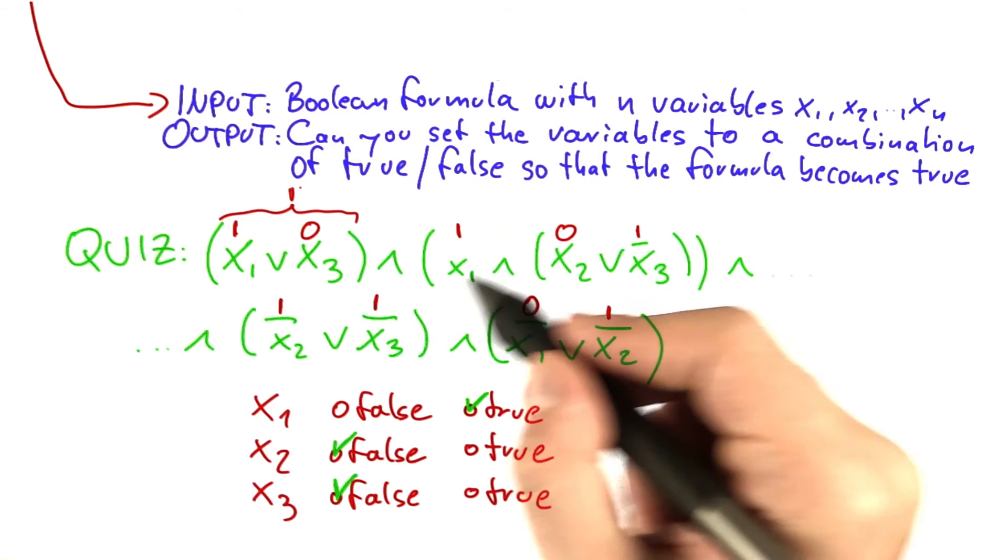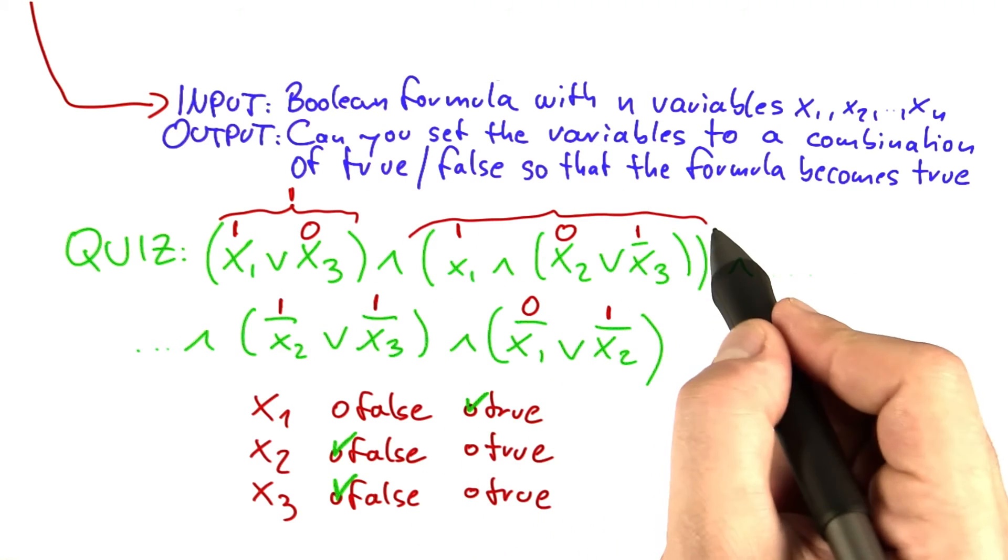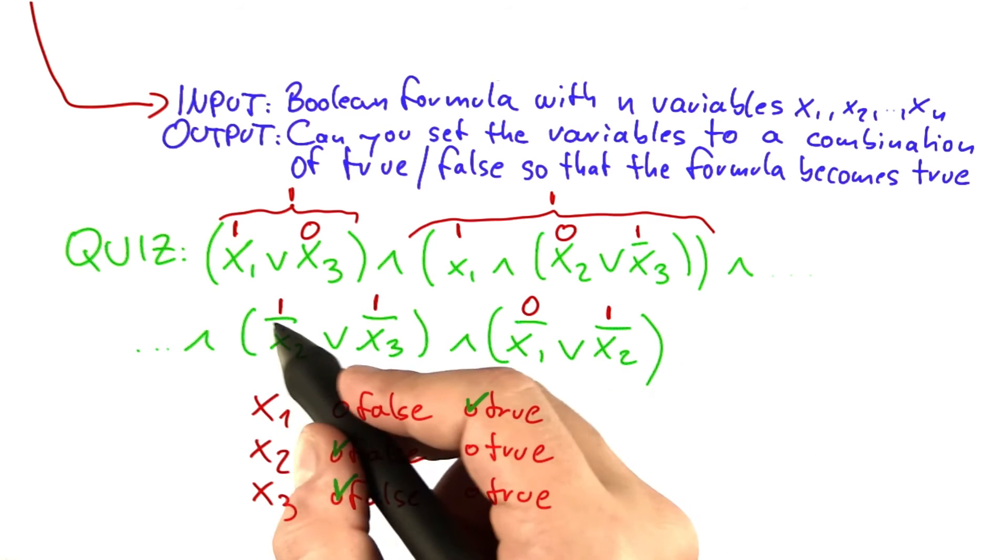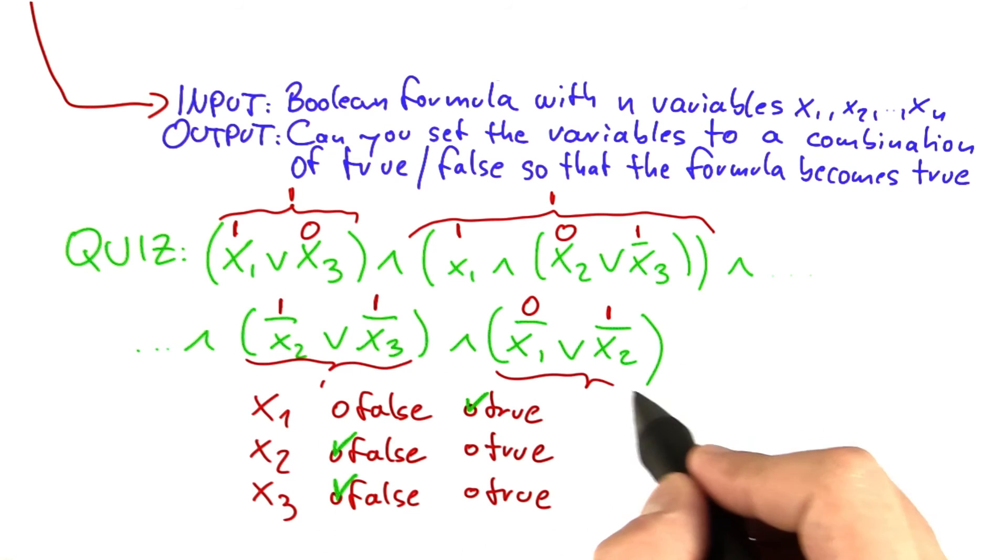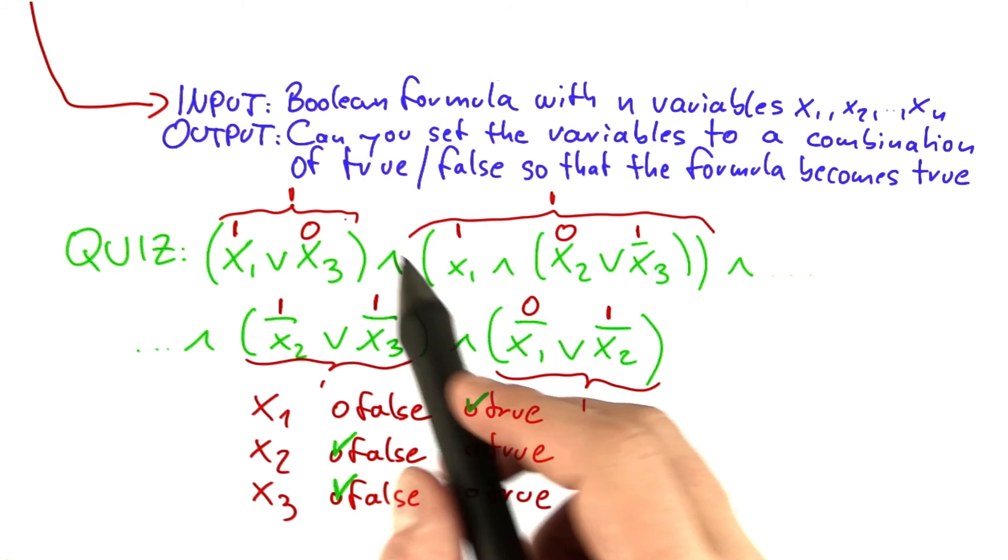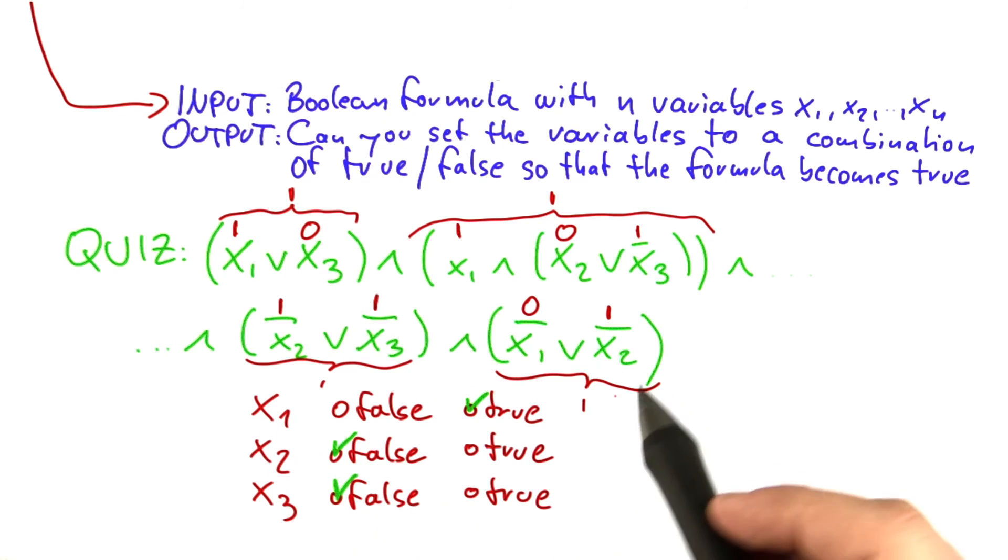And so for the whole thing, this here evaluates to 1, this here evaluates to 1, because this evaluates to 1, and this 1 here as well. This goes to 1, and this 1 here as well. And so we have 1, and 1, and 1, and 1, which satisfies the whole formula.